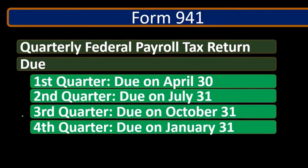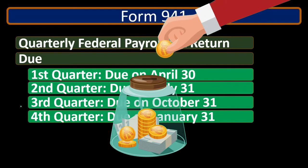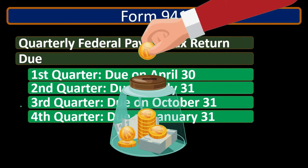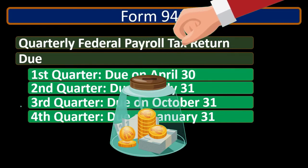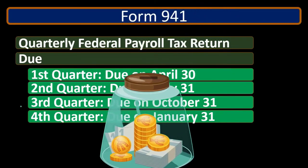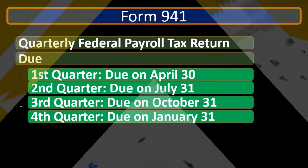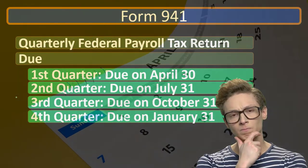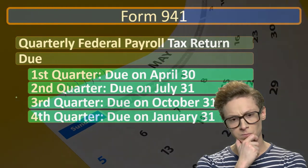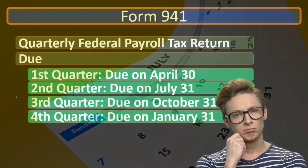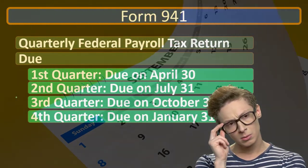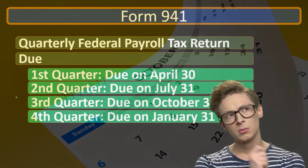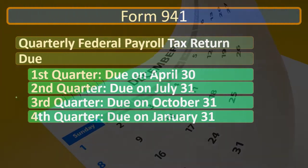Quarterly means there are four payments and we divide the year into quarters. There are 12 months in the year; 12 divided by four gives us three-month time periods. So the first quarter is January, February, March; then April, May, June; then July, August, September; and finally October, November, December — three-month quarters.